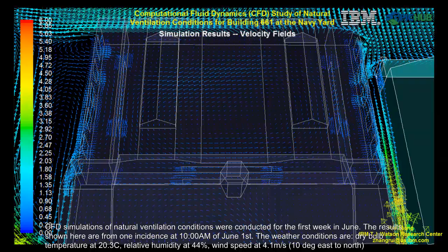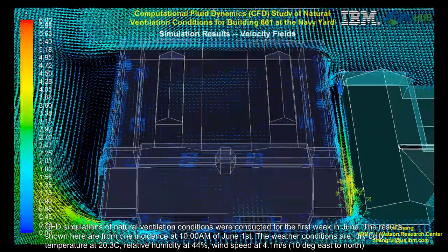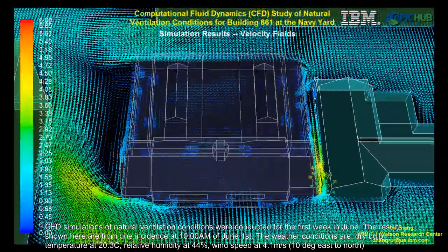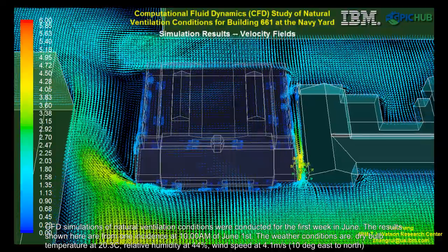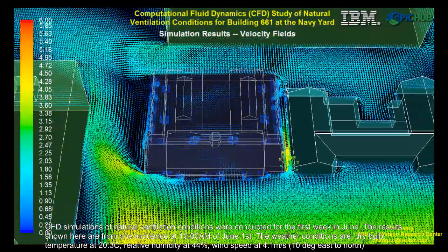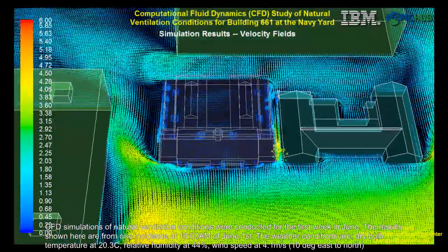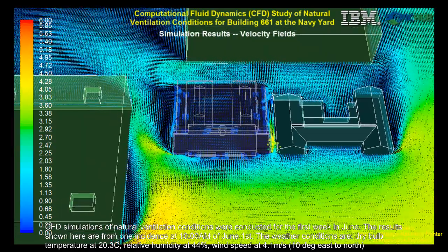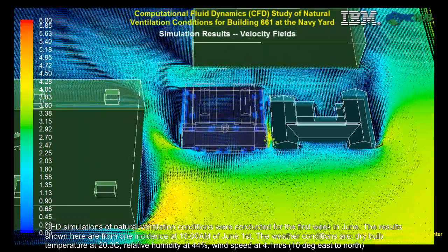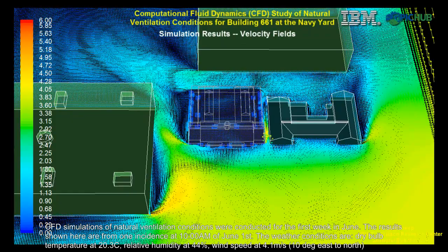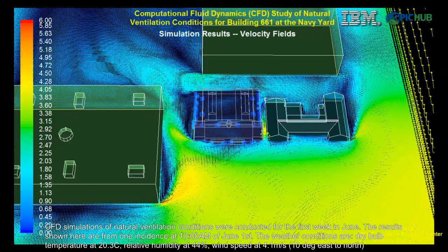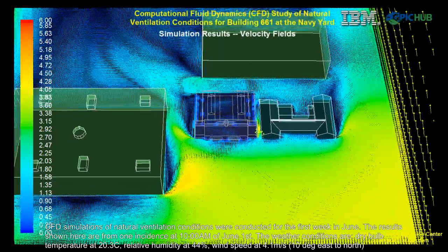This is the 3D animation of the CFD simulation results on the flow field around Building 661 with three adjacent buildings, and the flow inside Building 661. Again, the vectors represent the flow directions at each element, and the color represents the velocity magnitude.